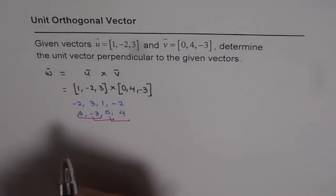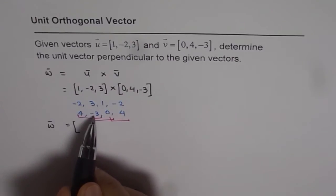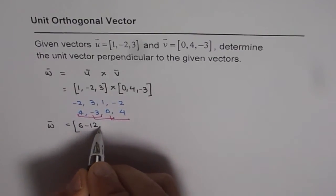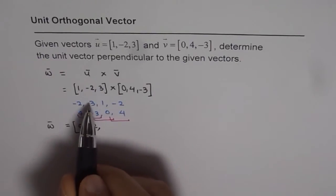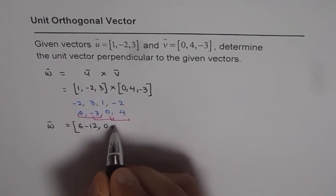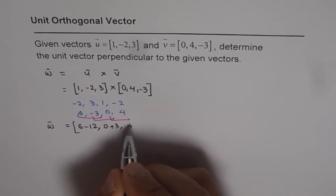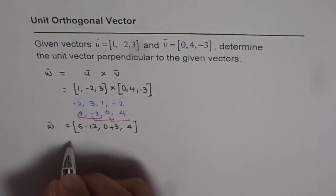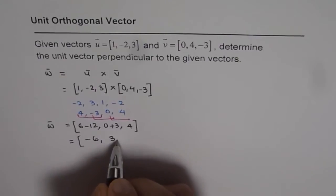I can now write down w: the i component is minus 2 times minus 3, which gives 6, minus 4 times 3, which is minus 12. The j component along the j unit vector will be 3 times 0, which is 0, minus minus 3 times 1, which is plus 3. And the k component gives 0, so it is just 4. Rewriting: 6 minus 12 is minus 6, then 3, and 4.